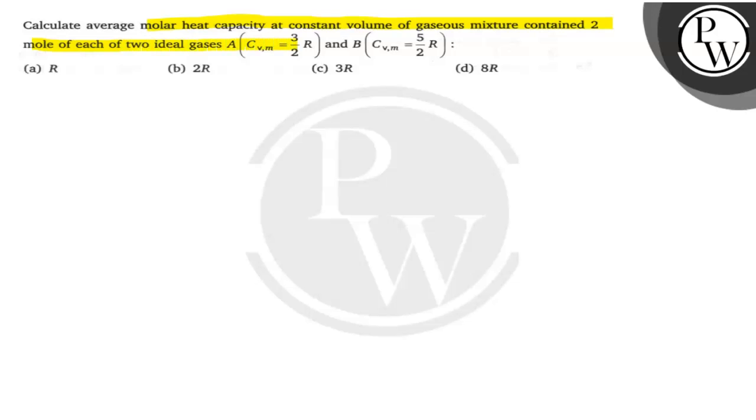gases: for A, Cv is equal to 3 by 2 R, and for B, Cv is equal to 5 upon 2 R.